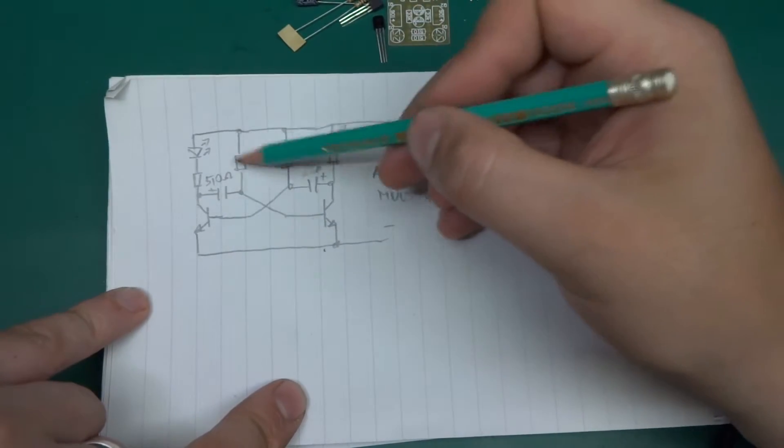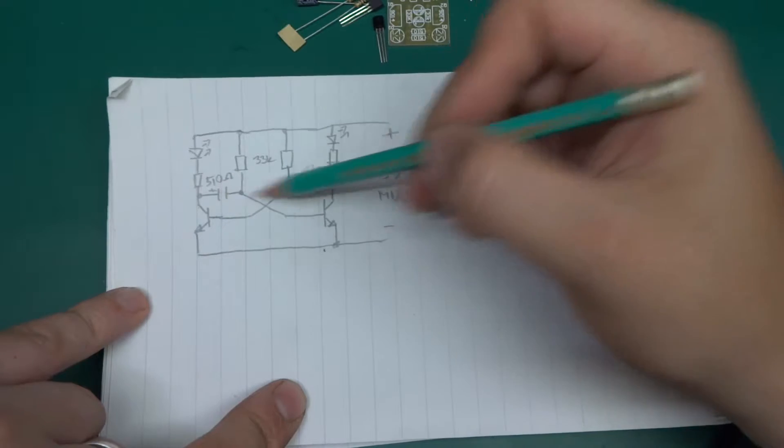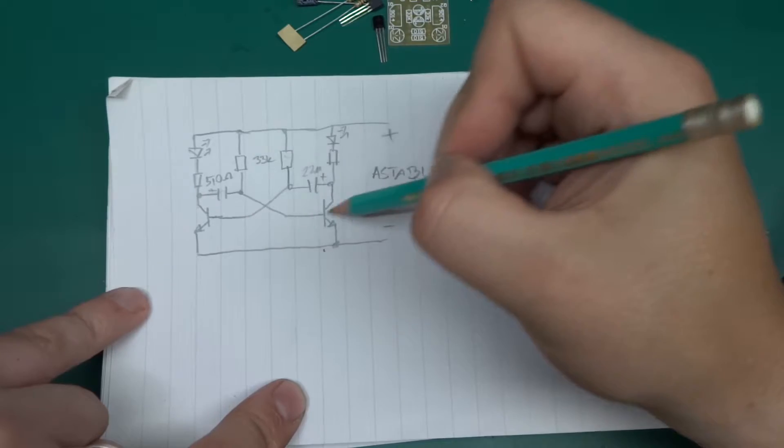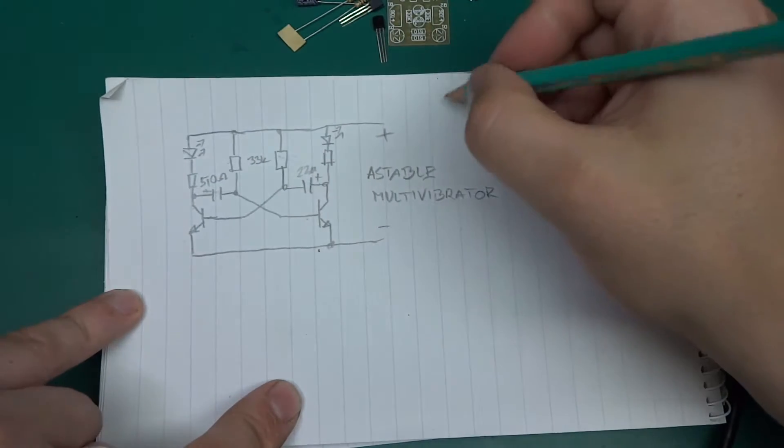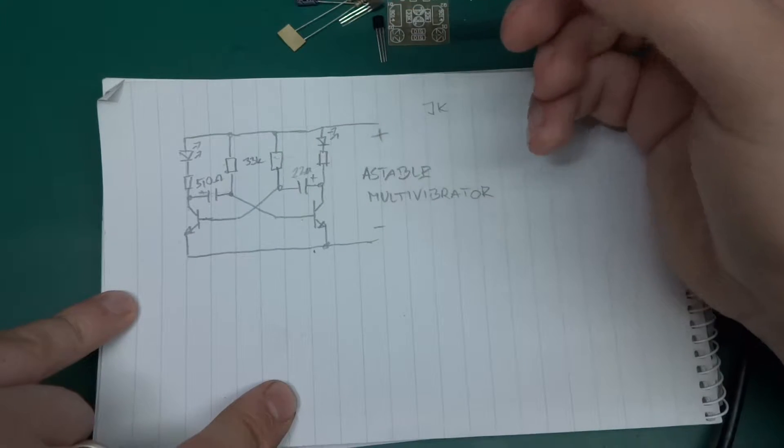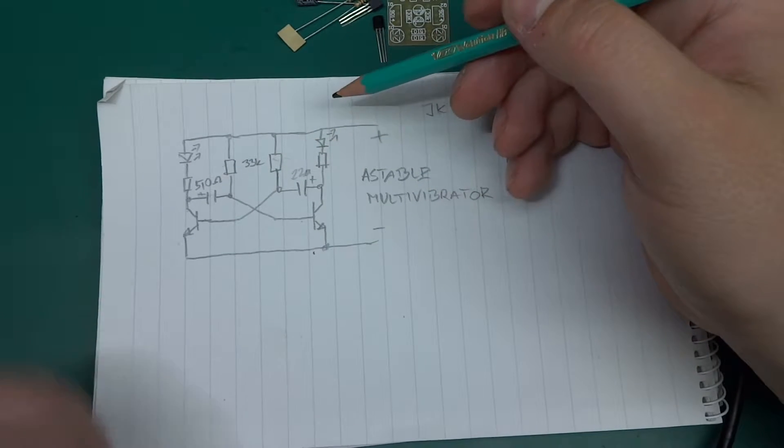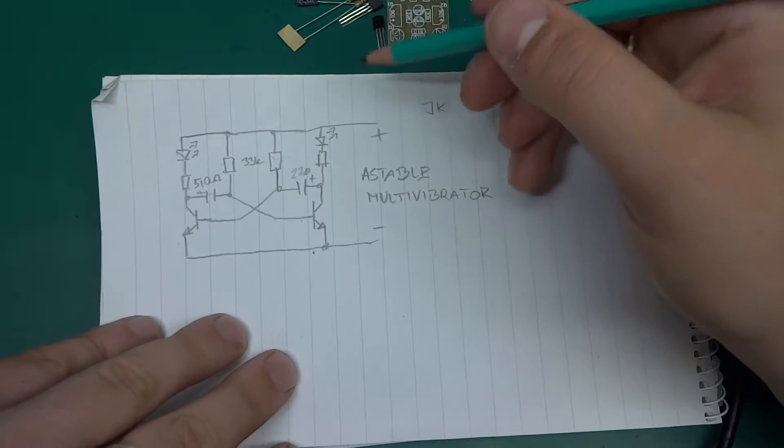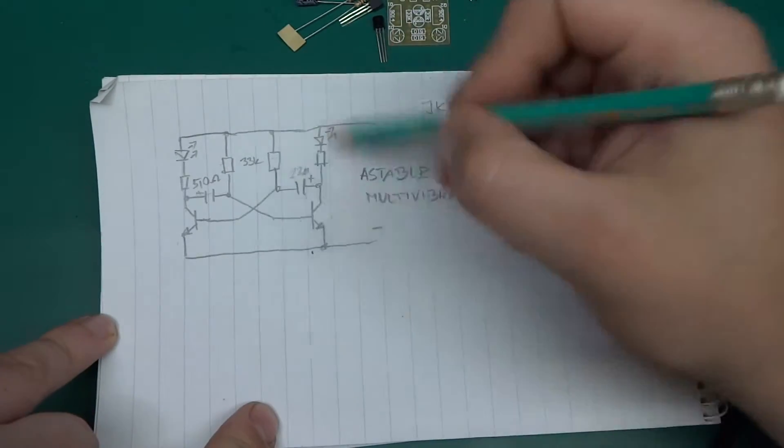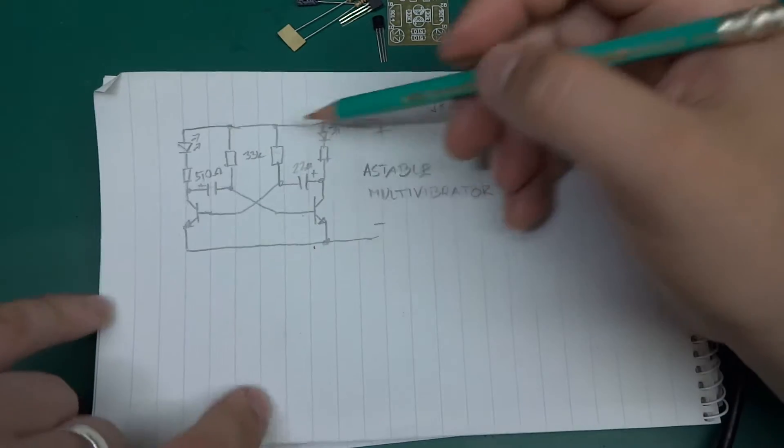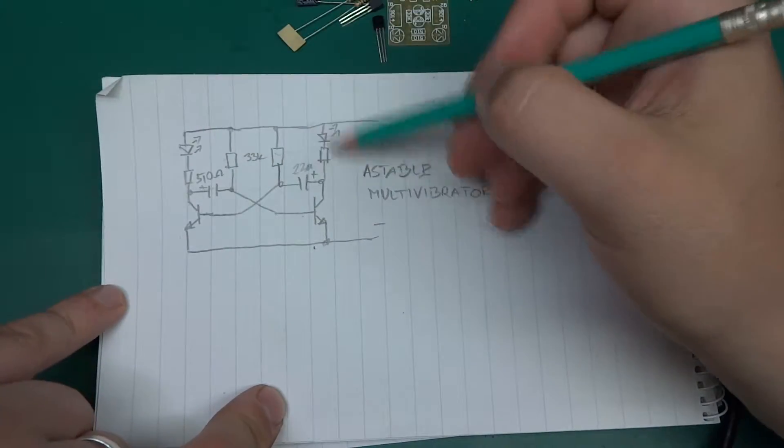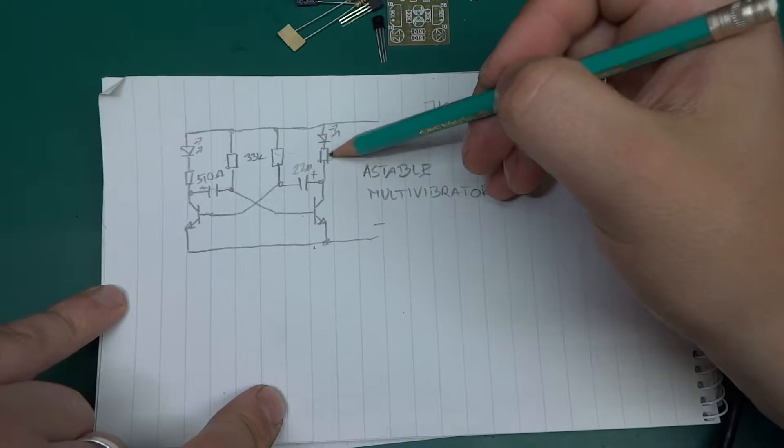Astable multivibrator means it's not stable, so it will oscillate. There's a few variations of this. By removing the caps and those resistors and just putting resistors in here, you could basically get a JK flip-flop. In this setup, once you apply voltage, the current goes everywhere that it can.